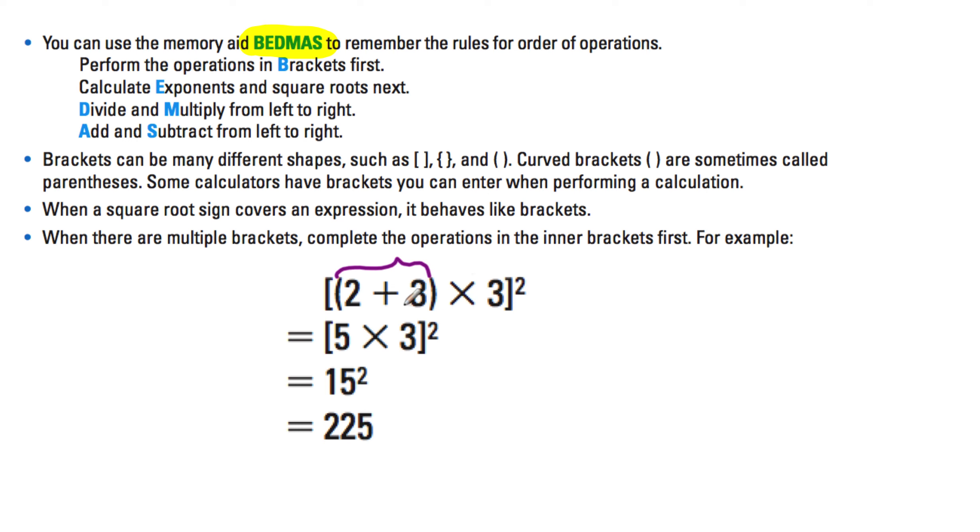Two plus three becomes five times three. So five times three with the exponent, then you complete in the bracket again. Five times three is 15. 15 squared: 15 times 15 equals 225. Remember these points.